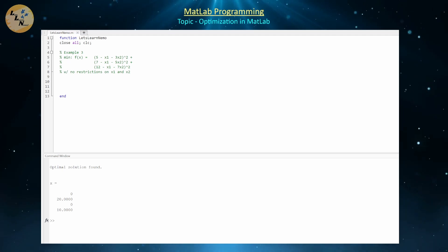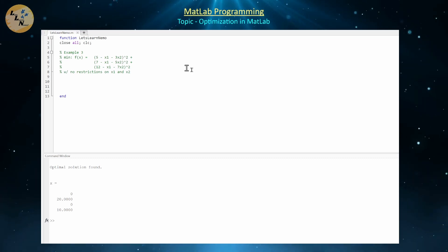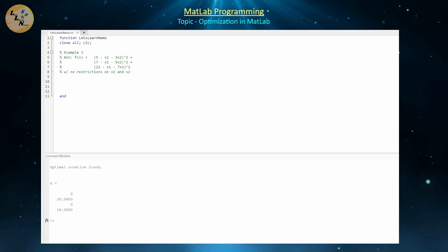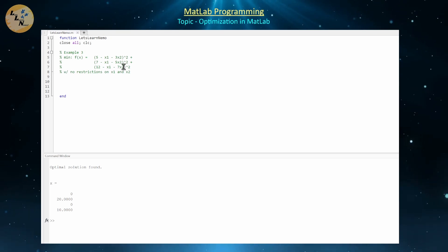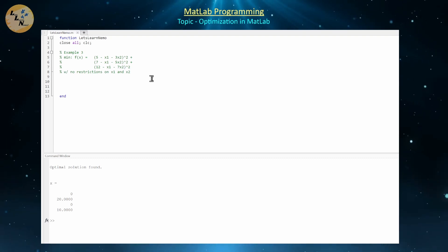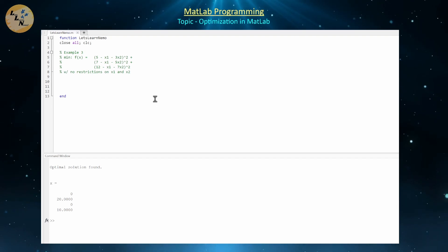Now let's consider a non-linear example. The goal is to minimize f(x) = (5 − x1 − 3x2)² + (7 − x1 − 5x2)² + (12 − x1 − 7x2)². This is not a linear program — it's a non-linear program. For those familiar with regression, this is the minimization of the sum of squared residuals for a simple linear regression model. We want to find x1 and x2 that minimize this function.